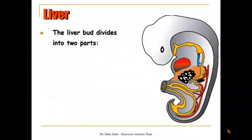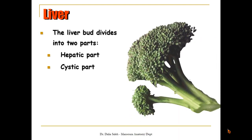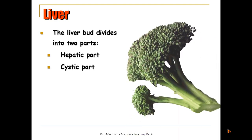The liver bud divides into two parts: the hepatic part, cranial, and the cystic part, caudal. If we enlarge it, the larger cranial part represents the hepatic part of the liver bud, while the smaller caudal part represents the cystic part of the liver bud.